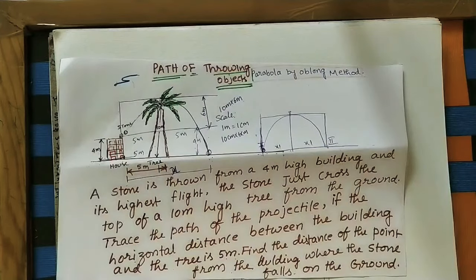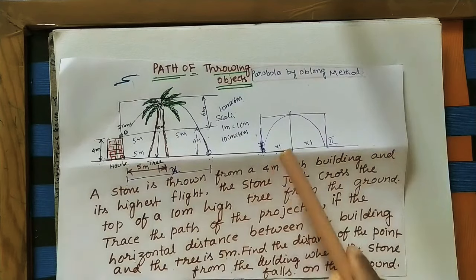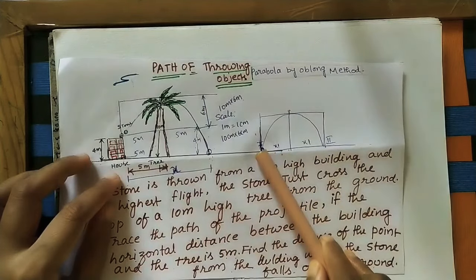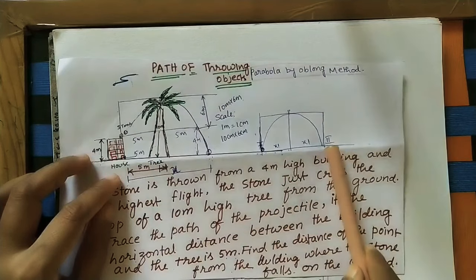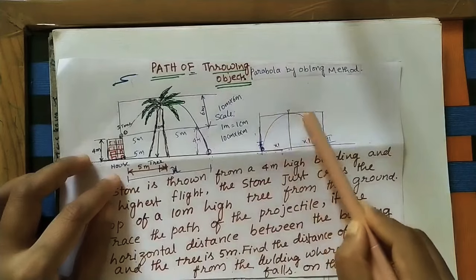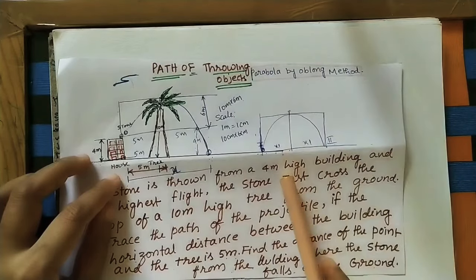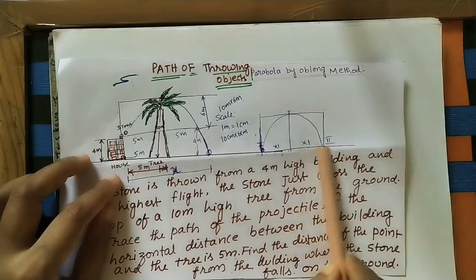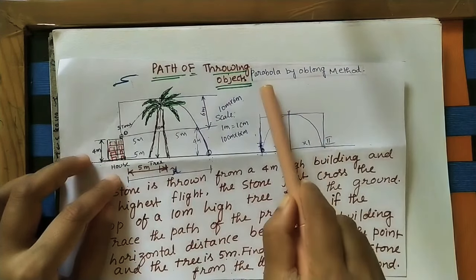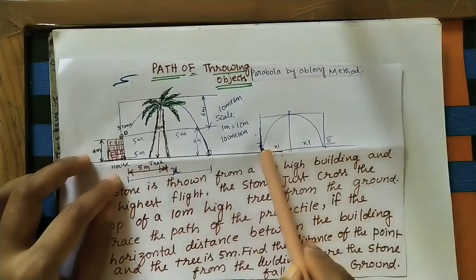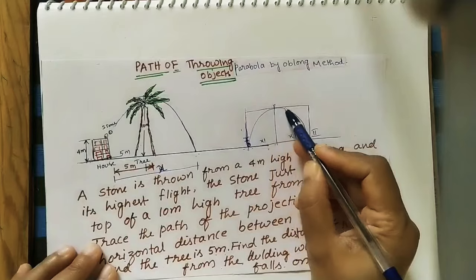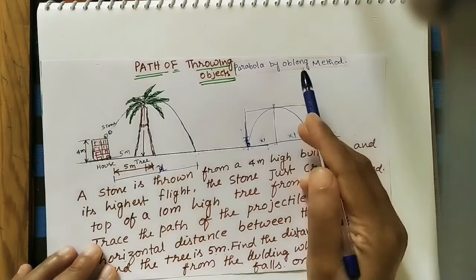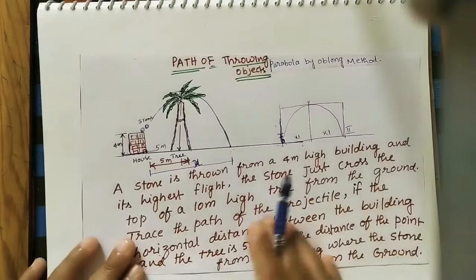Today we will discuss finding the path of a throwing object from one position to another. Taking one example: an object is thrown from a first position to a second position on the ground level. The throwing object moves in a path called a parabola. We are doing the parabola using the oblong method, which involves taking one rectangle to construct the parabolic path.